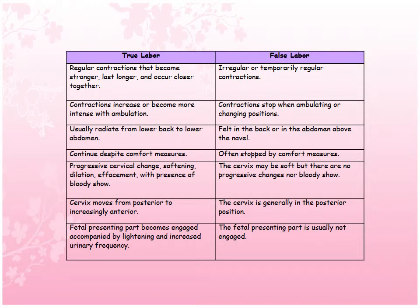Let's review the comparison. In true labor, regular contractions become stronger, last longer, and occur closer together; in false labor, contractions are irregular or temporarily regular. In true labor, contractions increase in intensity with ambulation; in false labor, they stop when ambulating or changing position. In true labor, contractions radiate from the lower back to the lower abdomen; in false labor, they are felt in the back or above the navel. In true labor, contractions continue despite comfort measures; in false labor, they are often stopped by comfort measures.